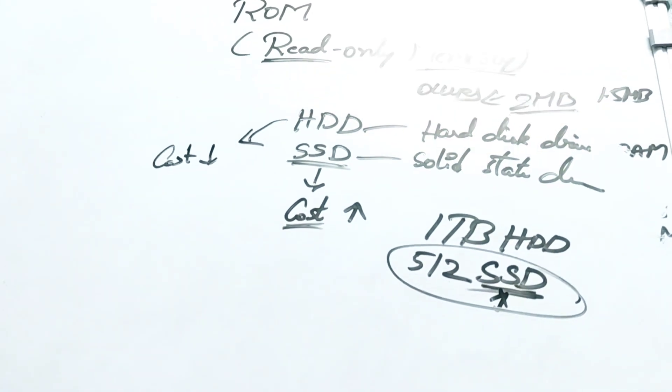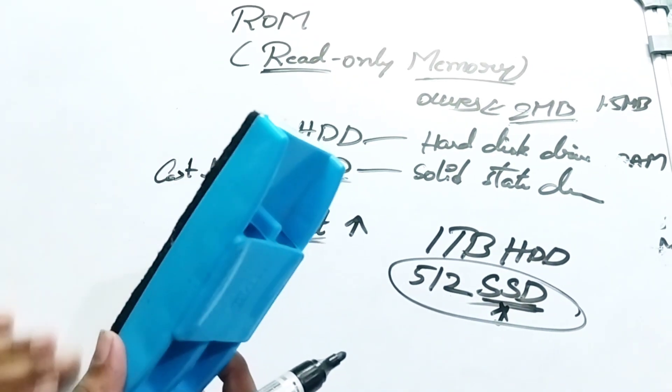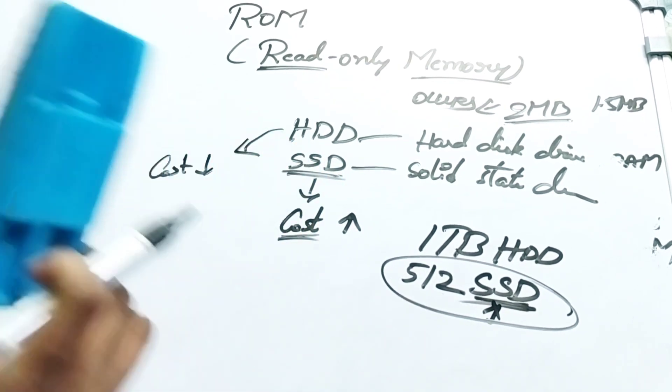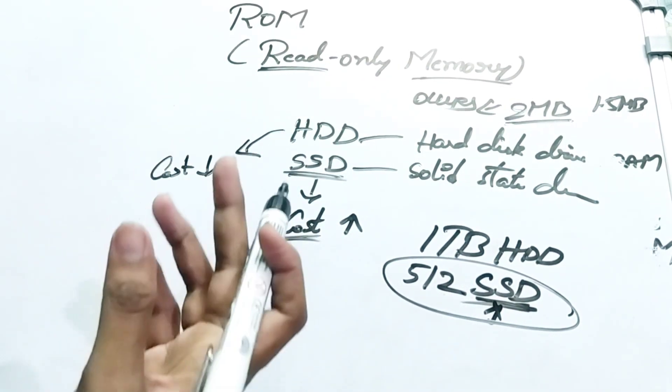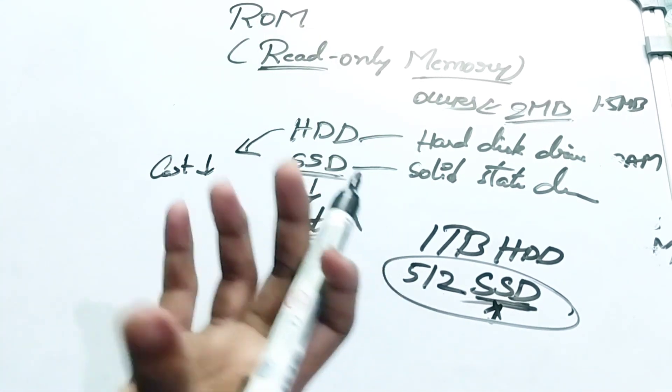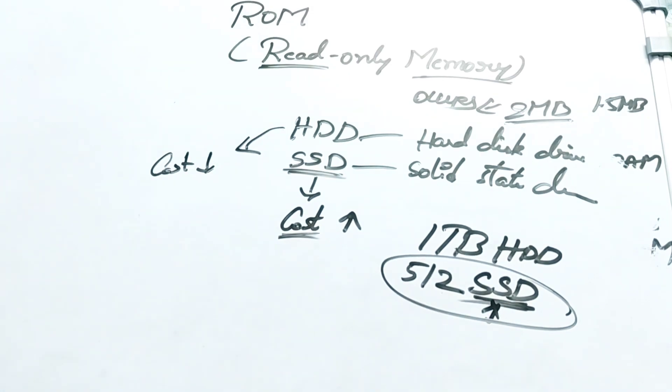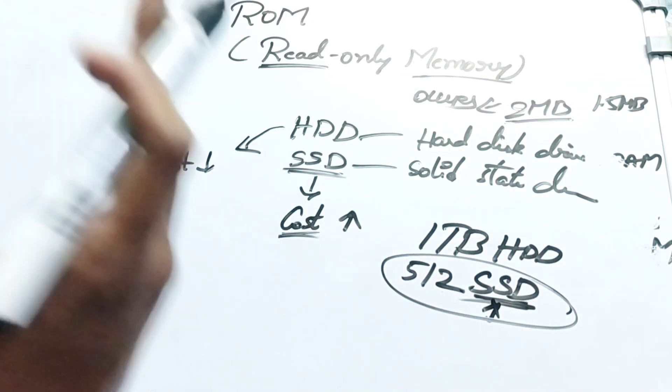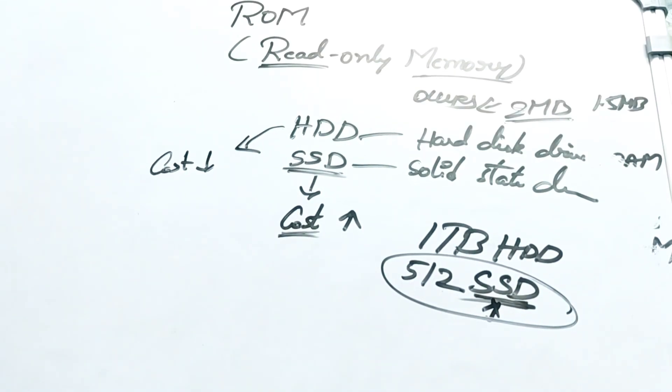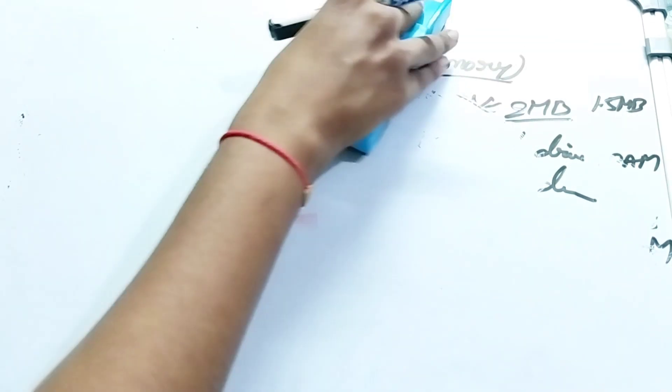That's it for RAM and ROM. In the next video, we will cover the processor — both phone processors and laptop processors in depth. Videos are approximately 10 to 15 minutes. We also have chapters on operating systems. If you liked this video, please like, share, and subscribe to the channel. Thank you.